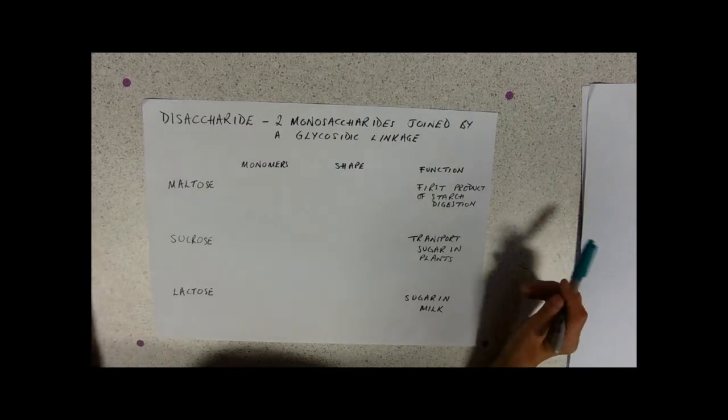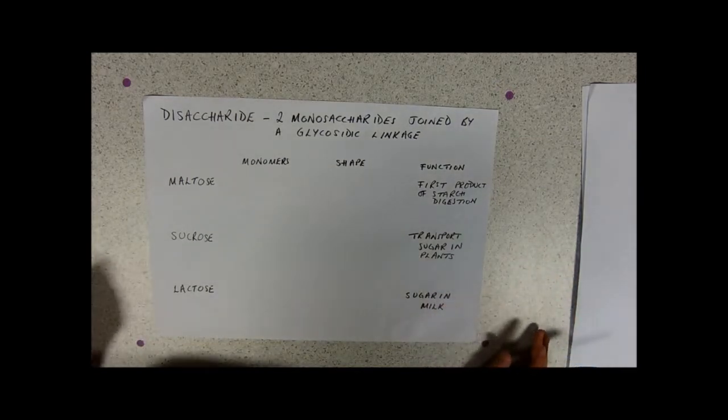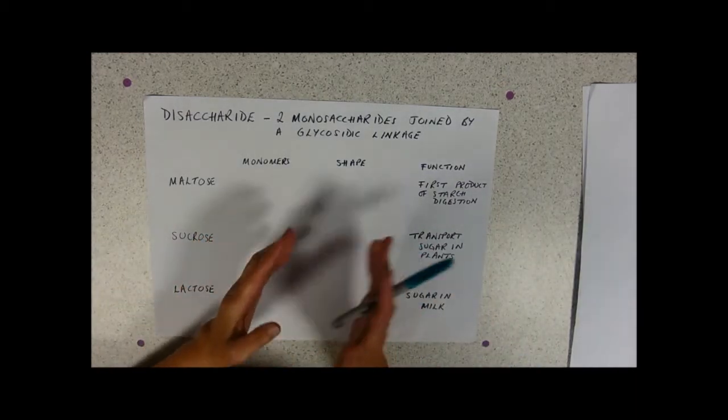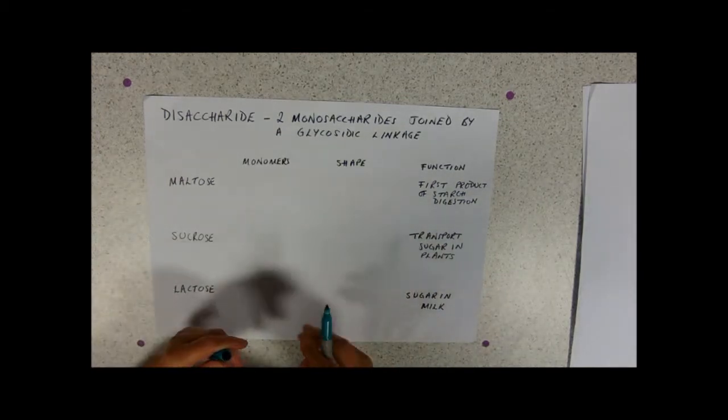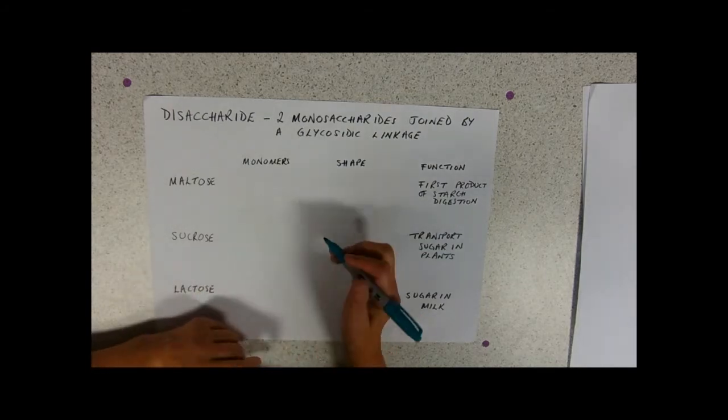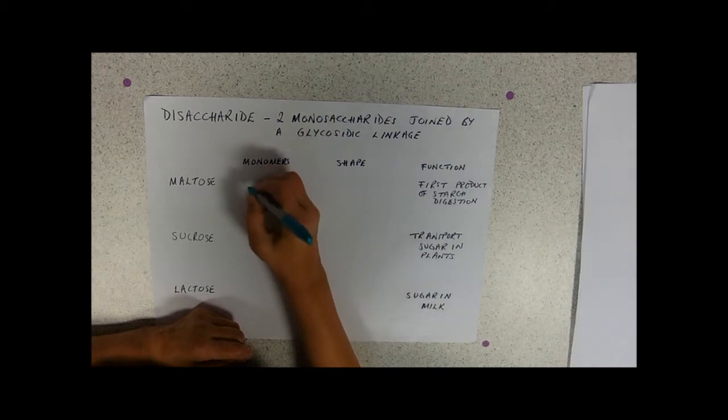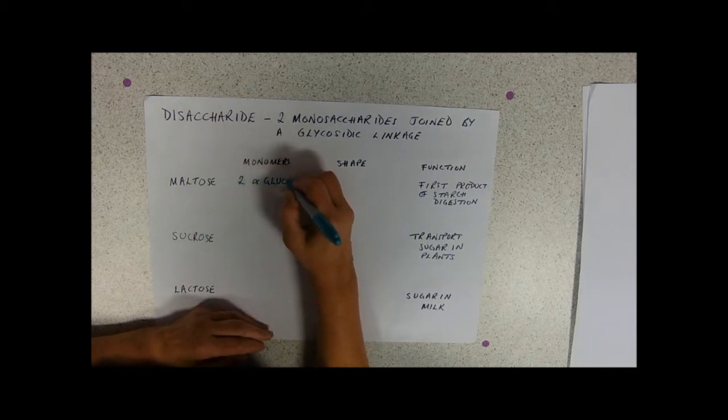So what do you need to know about disaccharides? You need to know three examples, the monomers, be able to recognize them in diagrams, and their functions. Maltose is the easy one used to illustrate the joining reaction by condensation and breaking down by hydrolysis. Maltose is made of two alpha glucose molecules.